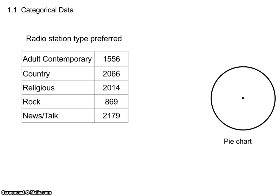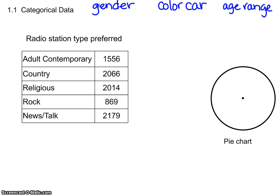Common types of categories you're going to see: number one is gender — male or female. Color of a car — red, gray, black. Age range: it's made up of numbers, but we're asking do you fall in the 5 to 10-year-old group, the 11 to 15-year-old group, and so on. So you fall into groups or categories.